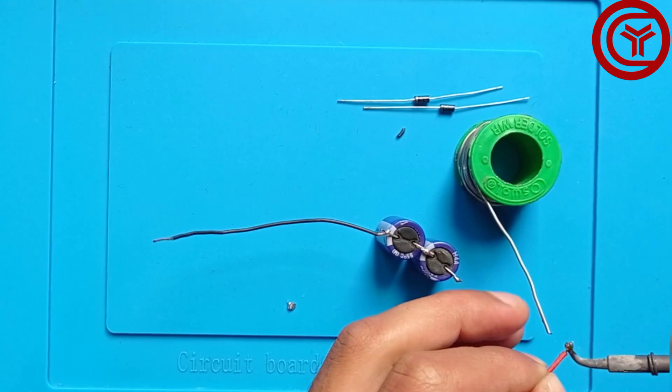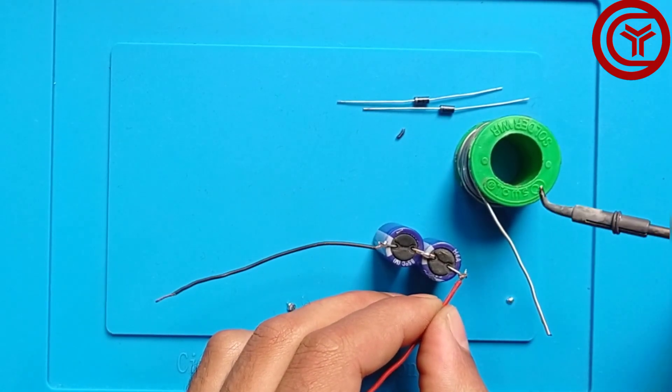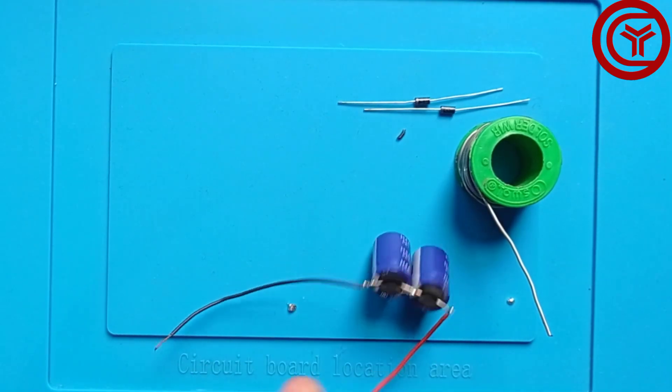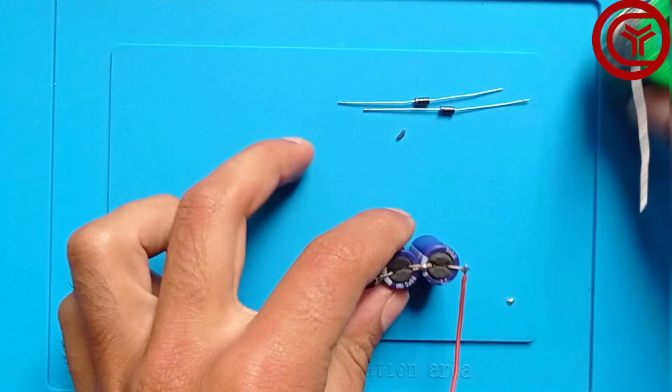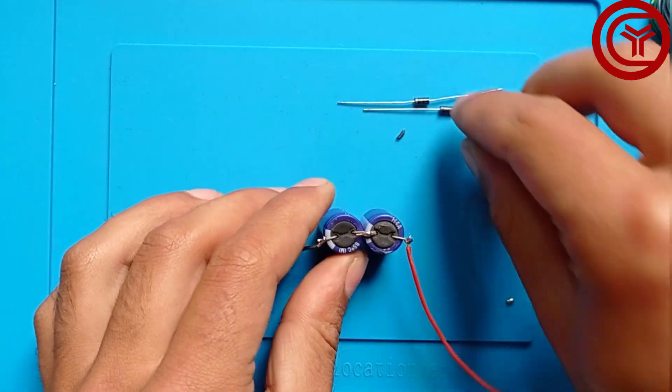Now we'll solder the red wire on the positive of the other capacitor. These two wires are going to be the output wires and will give double the voltage compared to the input voltage.